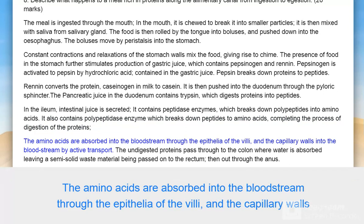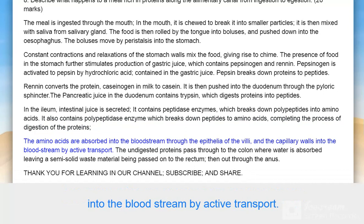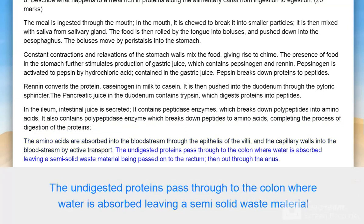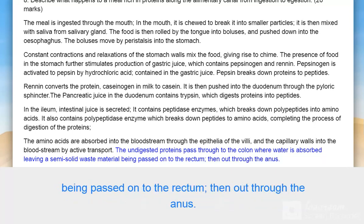The amino acids are absorbed into the bloodstream through the epithelia of the villi and the capillary walls by active transport. The undigested proteins pass through to the colon where water is absorbed, leaving semi-solid waste material that passes to the rectum and out through the anus.